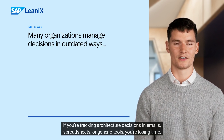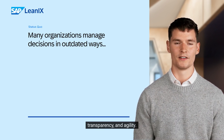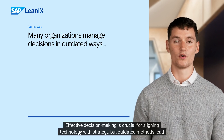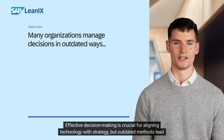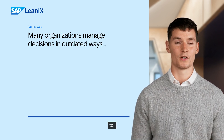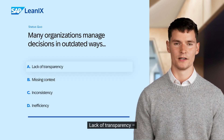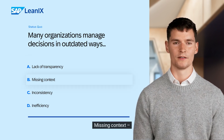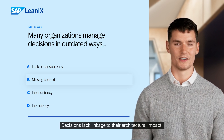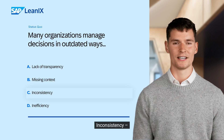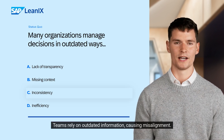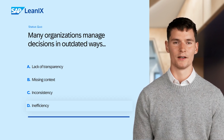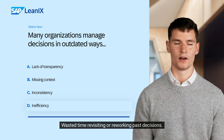If you're tracking architecture decisions in emails, spreadsheets or generic tools, you're losing time, transparency and agility. Effective decision making is crucial for aligning technology with strategy, but outdated methods lead to lack of transparency, no single source of truth, missing context — decisions lack linkage to their architectural impact — inconsistency, teams relying on outdated information causing misalignment, and wasted time revisiting or reworking past decisions.